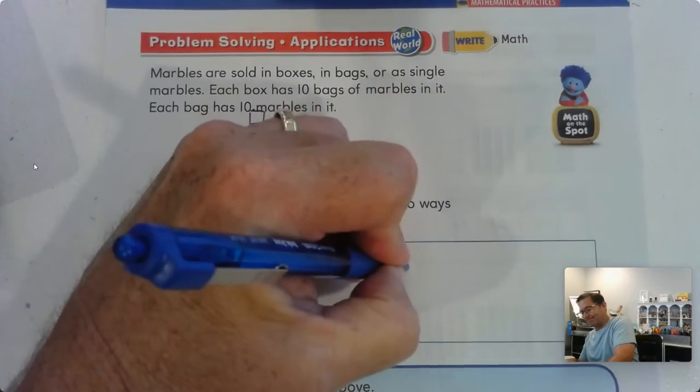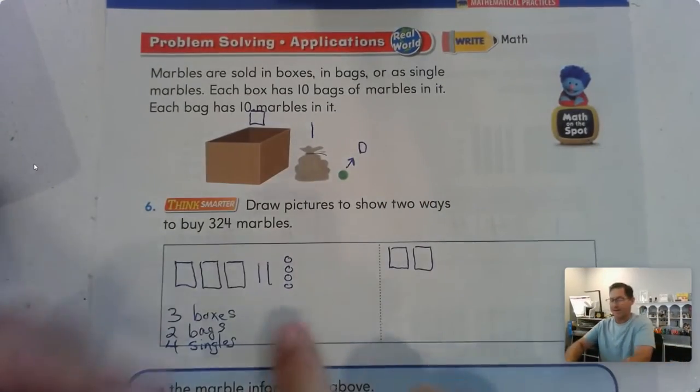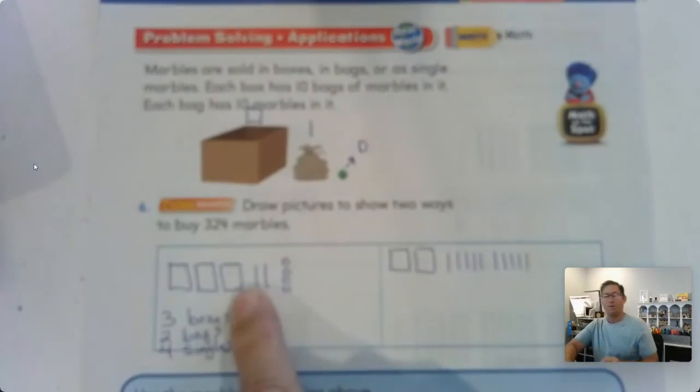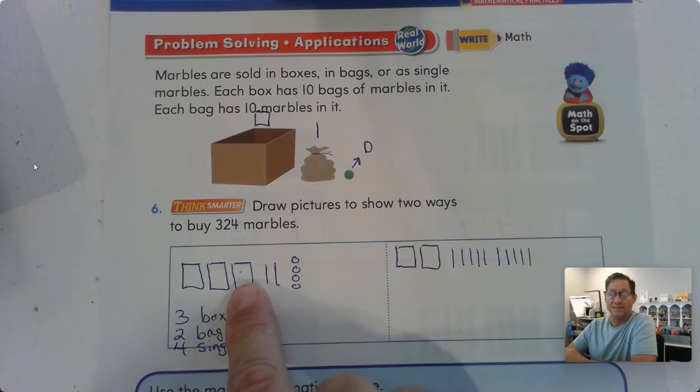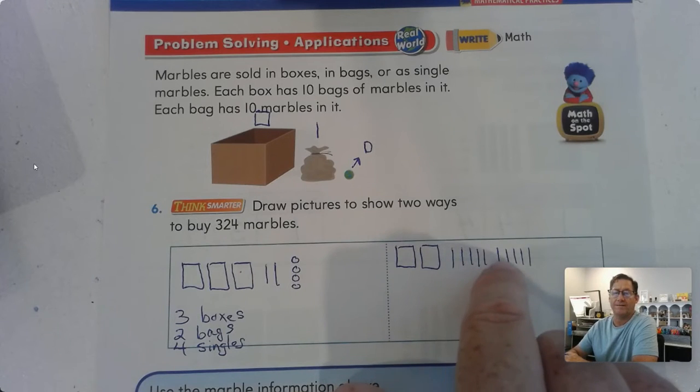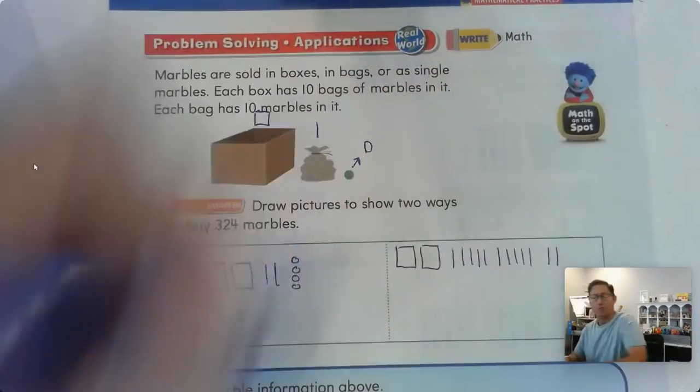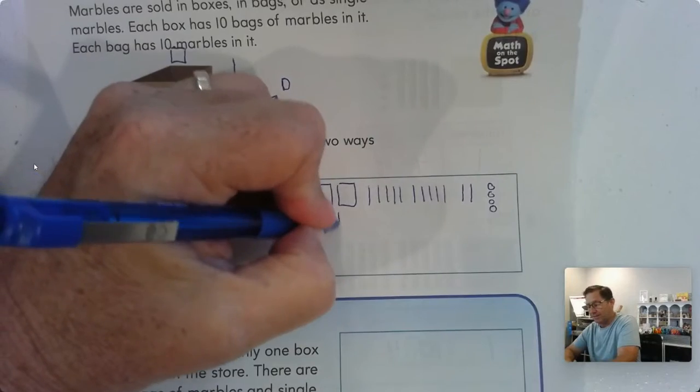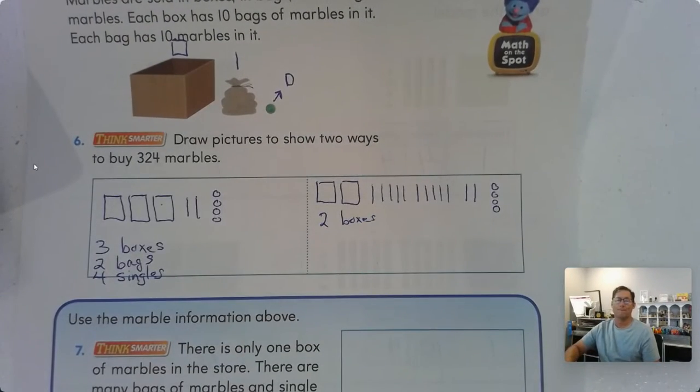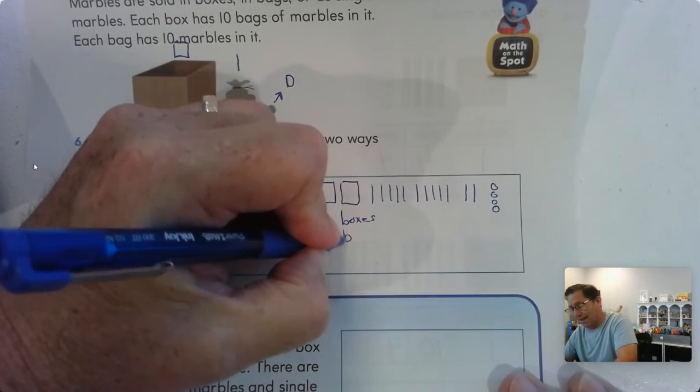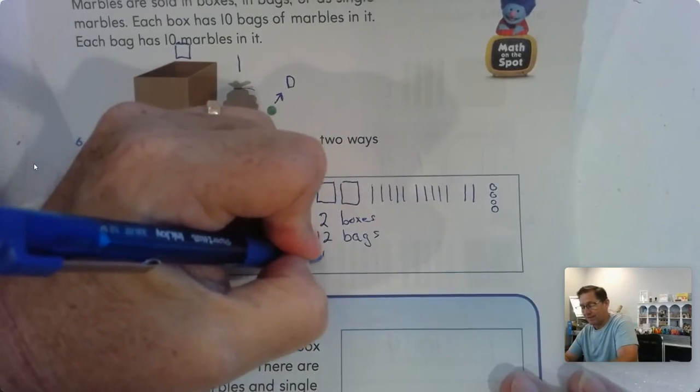Could you have 324 ones? You could. Could we have 32 tens? Yeah. But I'm going to do this. How about we keep two of the boxes and instead of this box of ten, let's make those ten ones. So all I did was I traded one of the tens or one of the boxes. So I took ten of the bags out of the box. So I'm going to send them as ten bags of marbles - two, four, five, and five more is ten. We still have the other two bags that we already had and the four singles. So in this case, we have two boxes. Two boxes of ten tens is 200. We have 12 bags, which is 120. And we have four singles.